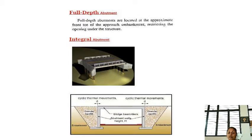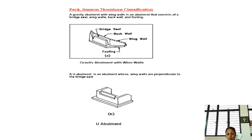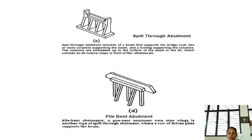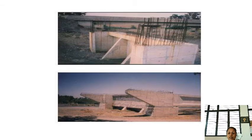Full depth abutments are located at the approximate front toe of the approach embankment, restricting the opening of the structure. In this sketch, you can see an integral abutment — that is the abutment which is integrated with the structure. Other types include a U-abutment, gravity abutment with wing walls, spill-through abutments, and pile bent abutments.